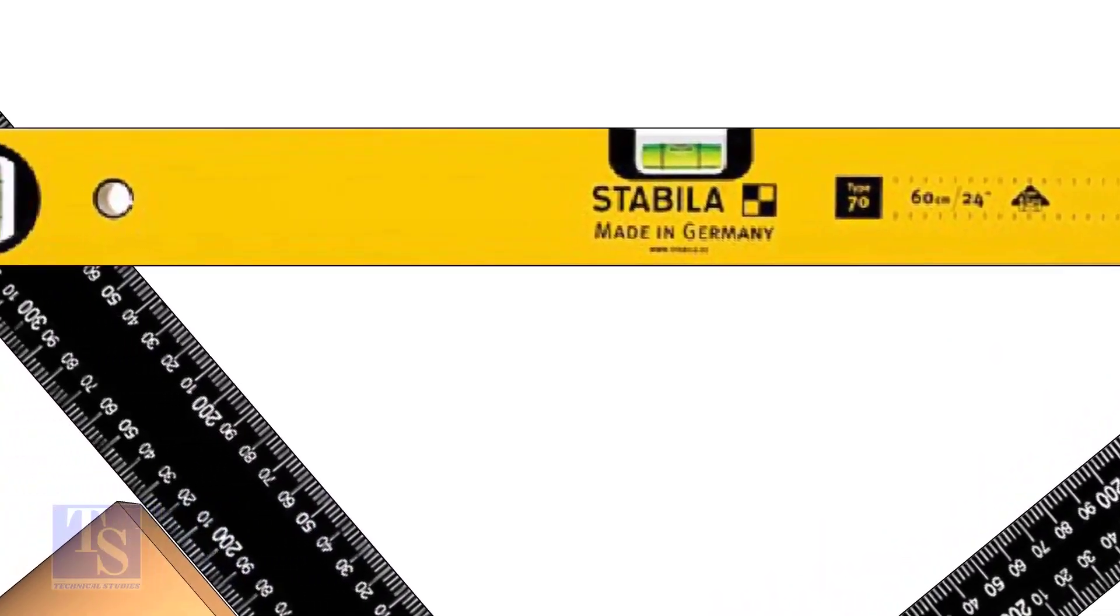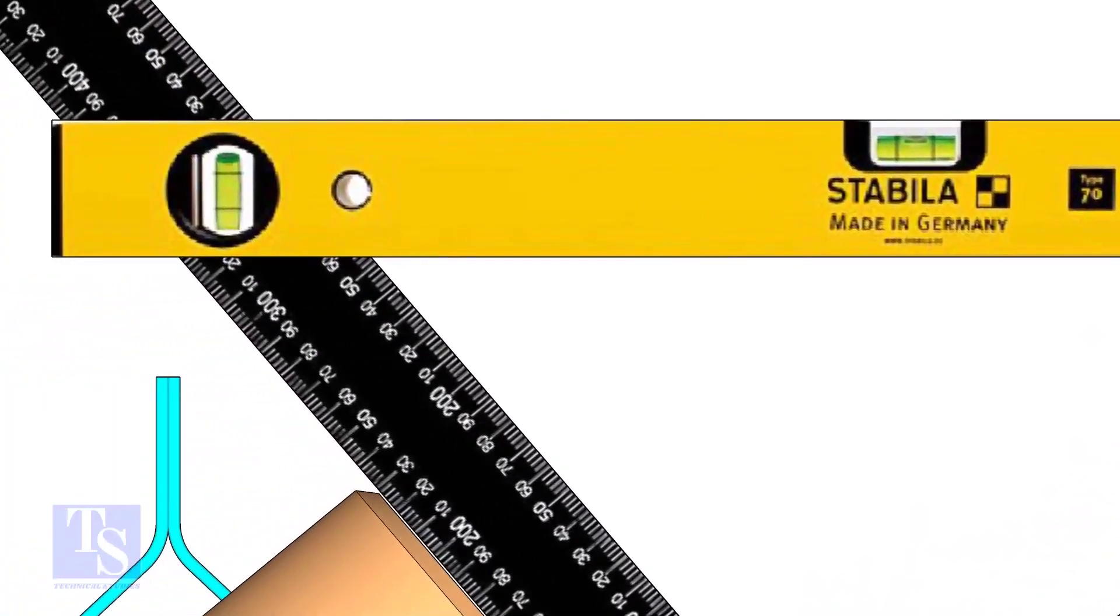Rotate the T, holding the right angle and the level bottle firmly, until the level bottle is in level.